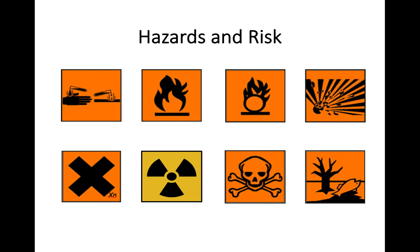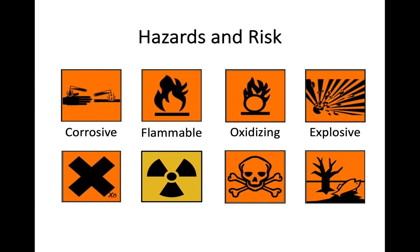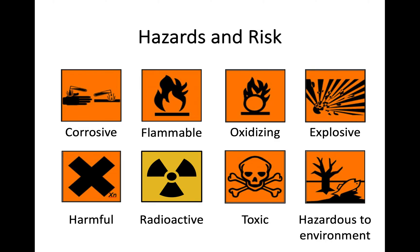You may be aware of some of the hazard symbols shown here — you'll find these on chemicals used in the lab. It might be worth giving yourself a little quiz. We have corrosive substances, flammable and oxidizing substances, explosive substances, harmful substances, radioactive substances, toxic substances, and the symbol with the dead fish and dead tree, which means hazardous to the environment. You should know what these all mean as they'll influence how you use these chemicals in the lab.